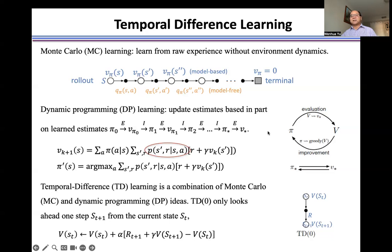This includes the policy evaluation and the policy improvement. Step by step, we got the optimal policy and the optimal state value function for the original problem.